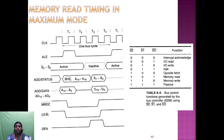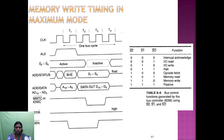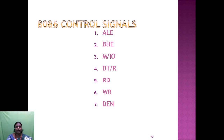The bus control function generated by the bus controller using S2, S1, and S0 in maximum mode: memory read = 110, memory write = 001, and 111 is passive. The timing diagram for memory read/write in maximum mode uses the same S2, S1, S0 decoding: 000 = interrupt acknowledge; 001 = IO read; 010 = IO write; 011 = halt; 100 = opcode fetch; 101 = memory read; 110 = memory write; 111 = passive.